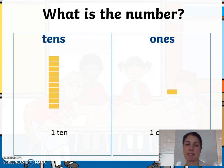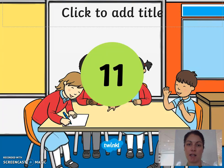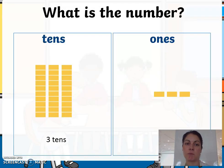The first slide is what is the number. We have tens and ones. As you can see we have one ten and one one, so we add these together: one ten plus one one and the answer is eleven.